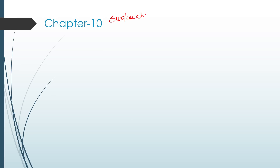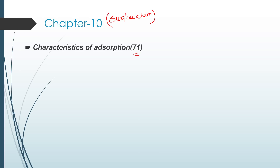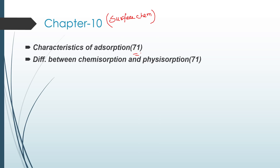Next is chapter 10, which is surface chemistry. A one-shot revision for chapter 10 is already uploaded. The first question is characteristics of adsorption, page 71. The second question is the difference between chemisorption and physical adsorption, page 71 — very important.